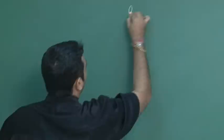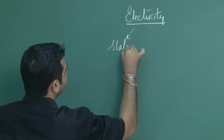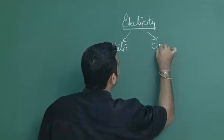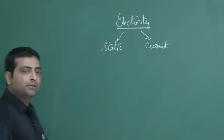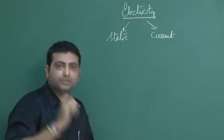We'll be starting with a topic which all of you are familiar about — a topic called electricity. Under electricity, there are two important terms. The first term is static, and the other term is current. Now for a student, it's easy to get confused: what exactly does electricity mean? What exactly does static mean? What exactly does current mean?